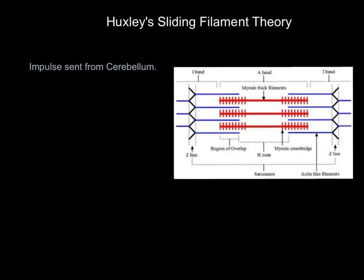In terms of anatomy and physiology, the cerebellum is the part of the brain that controls all our muscular movements. To instigate a muscular contraction, an impulse is sent from the cerebellum.